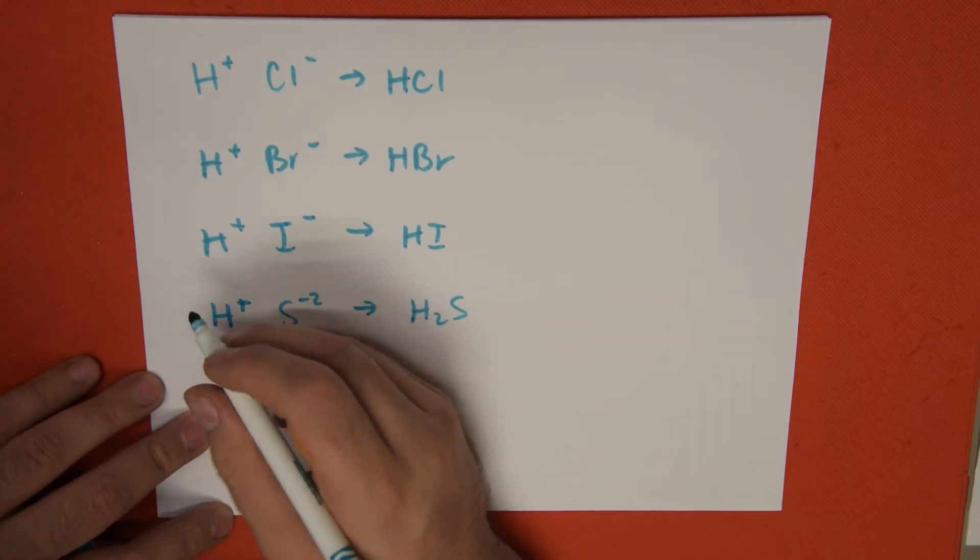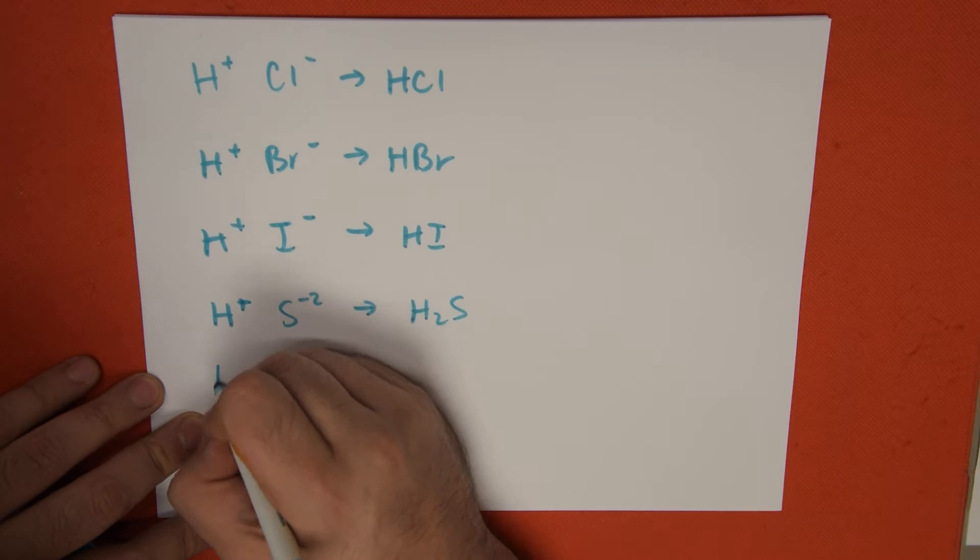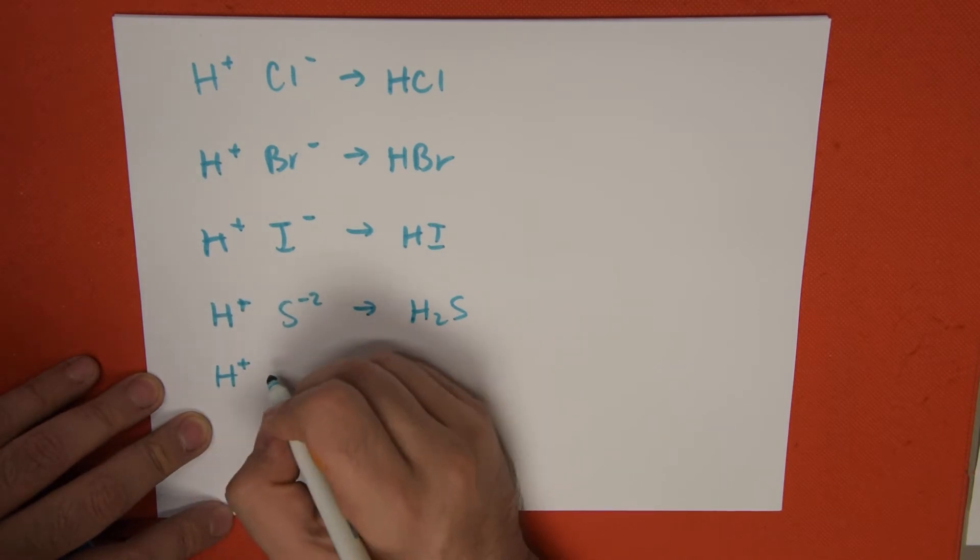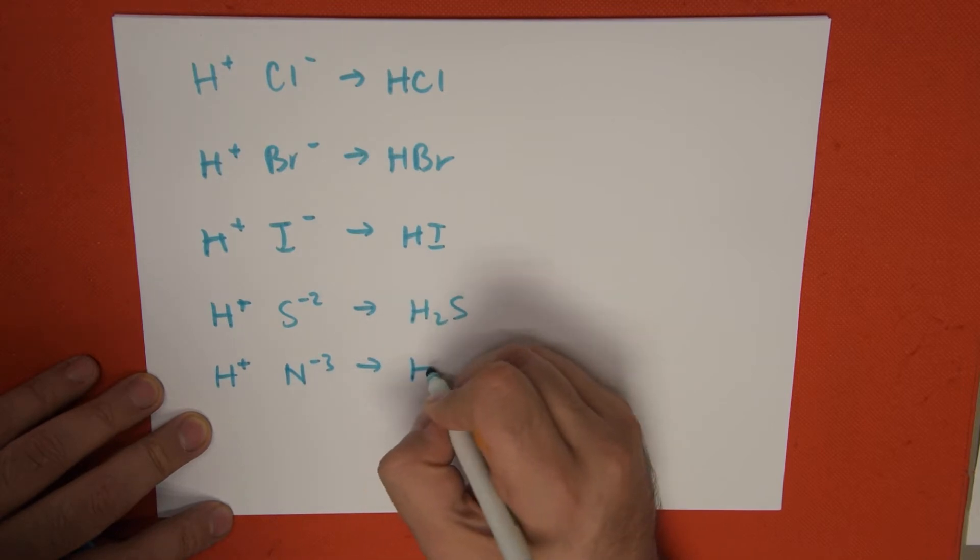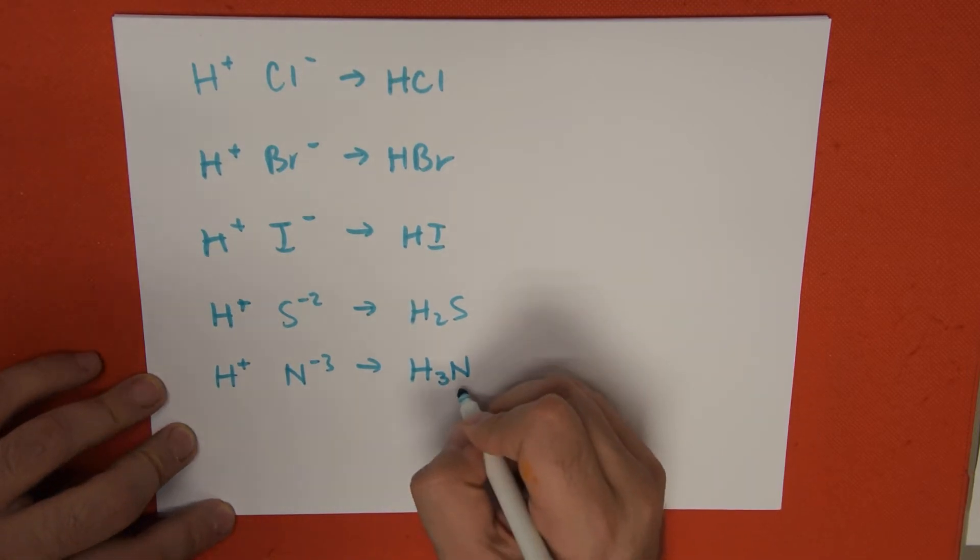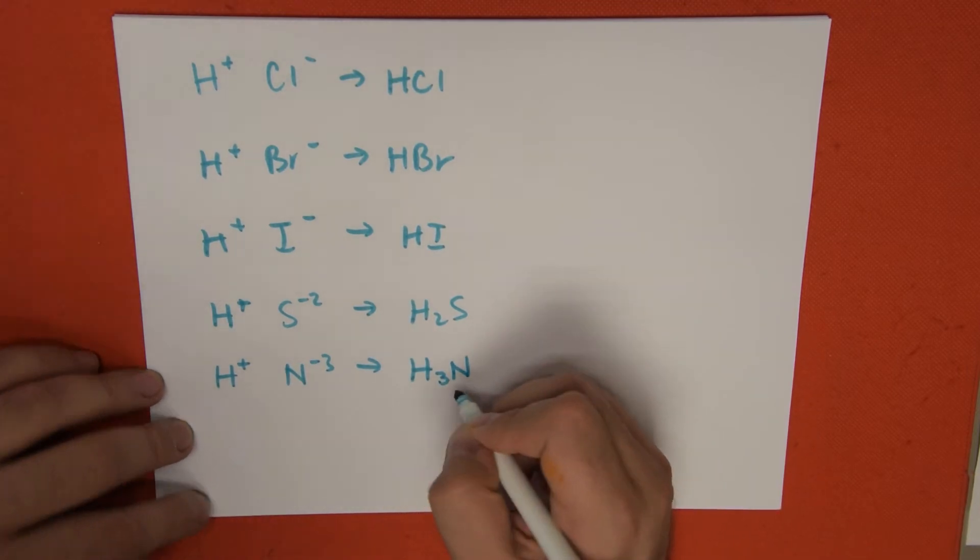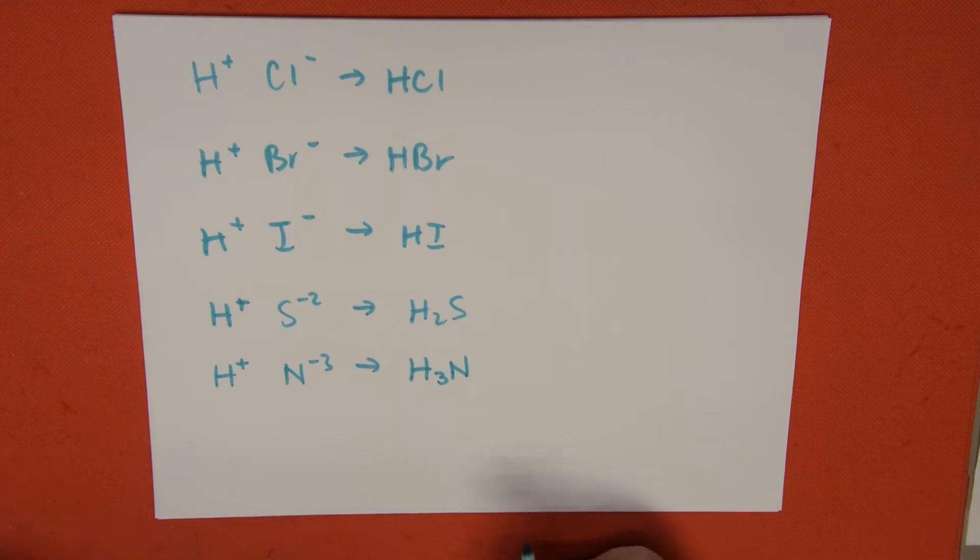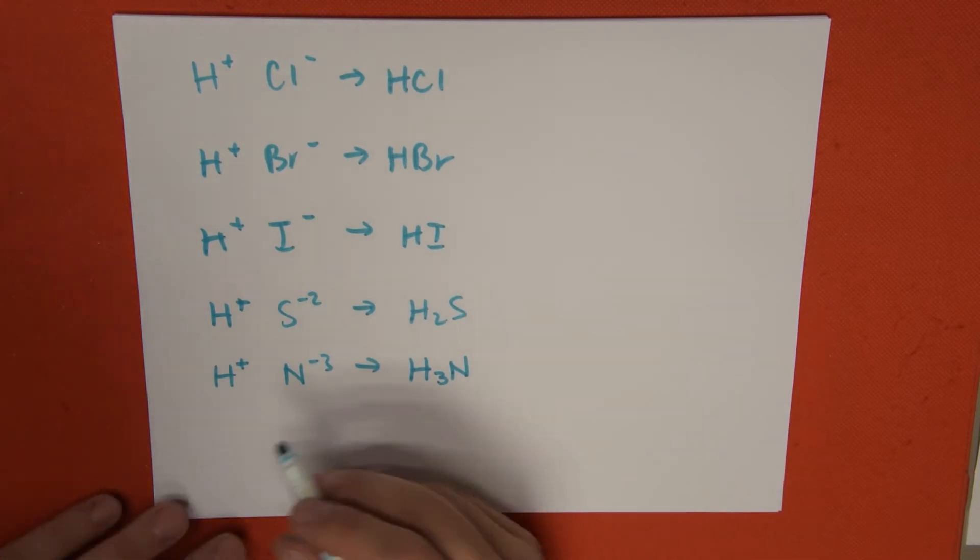The same applies for hydrogen with a plus one with nitrogen with a minus three, turning into H3N. This is something different. You'll find in textbooks we usually write it as NH3, which is ammonia, but we can also name it in the style as an acid.